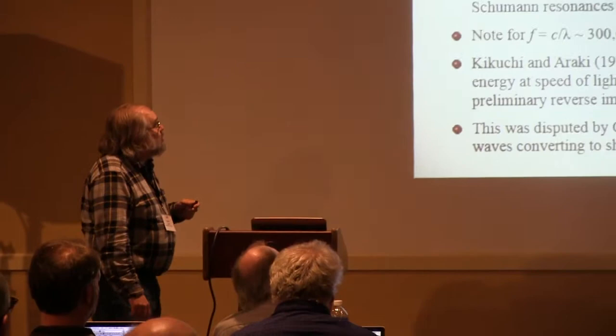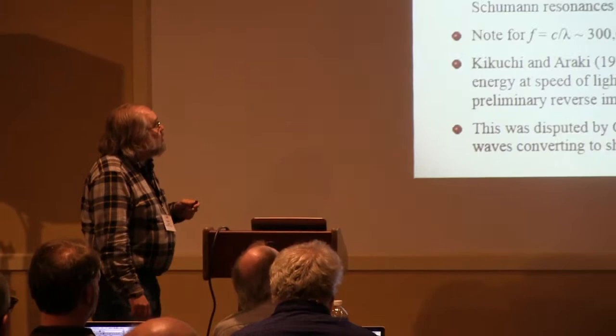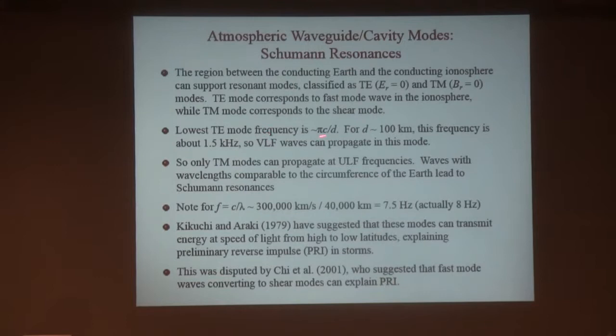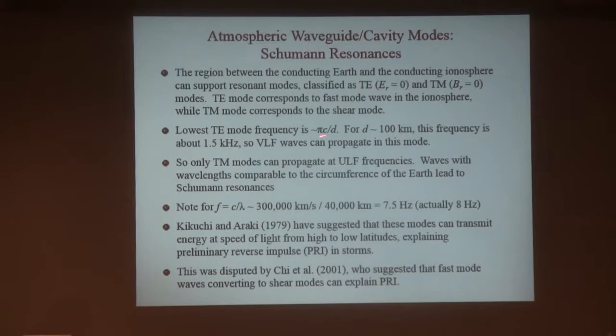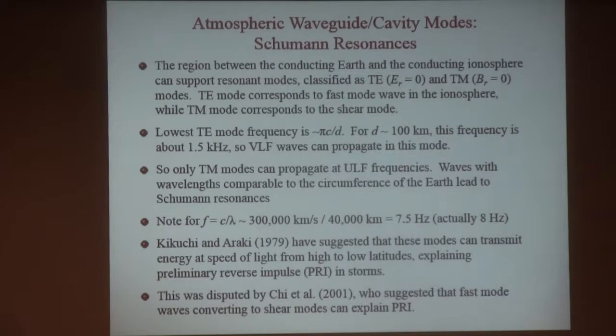Going down into the atmosphere, there's a cavity mode called the Schumann resonance. In electrical engineering terms, people talk about TE and TM modes. The TE mode is basically the mode trapped between the Earth and the ionosphere, with a fundamental frequency of the speed of light divided by the height of the atmosphere to the ionosphere — up in the VLF range, so not important for ULF. Only the TM modes can propagate. In principle those can go down to zero, but if you consider a wave with a wavelength equal to the circumference of the Earth, that's about 7.5 Hz — a pretty good approximation for the fundamental Schumann resonance at 8 Hz.